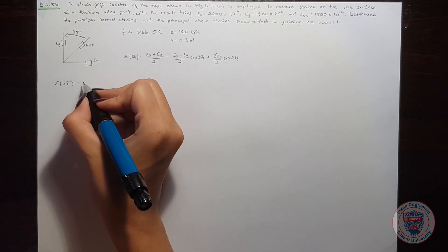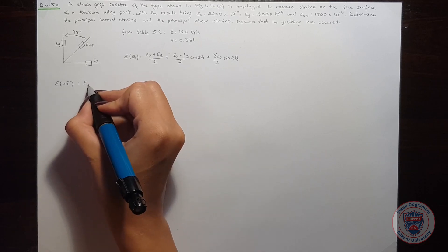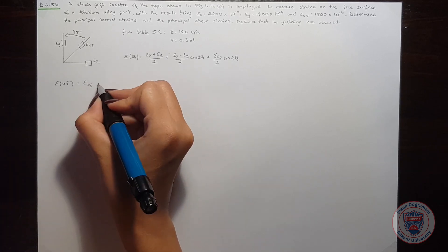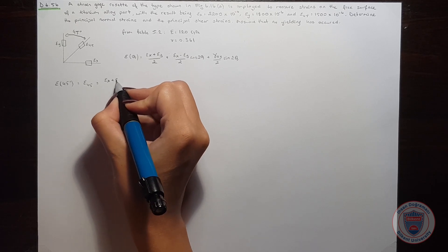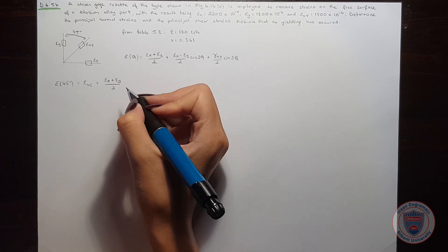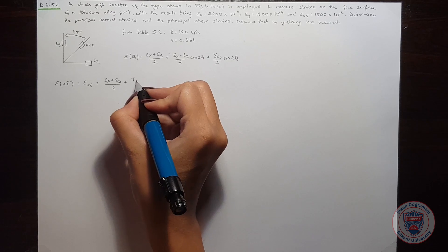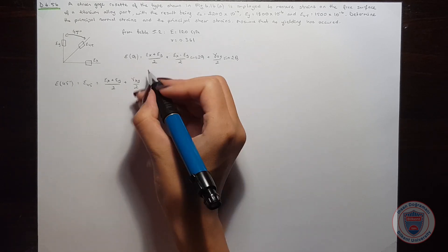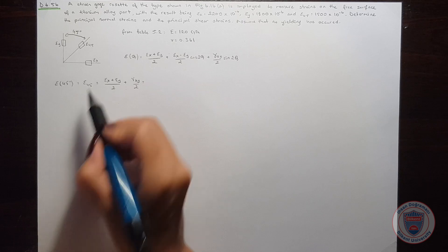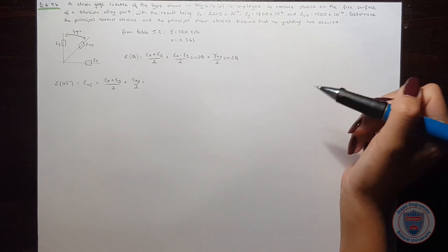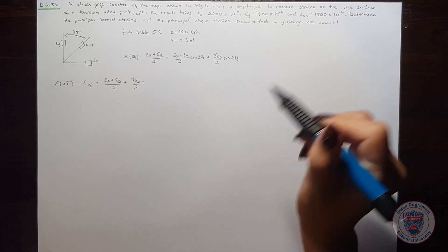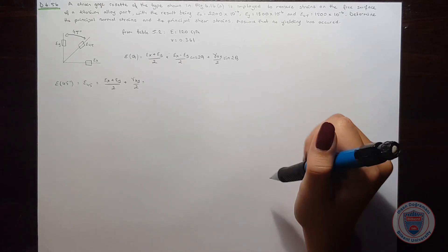We will obtain epsilon 45 and it will be equal to epsilon x plus epsilon y over 2 plus gamma xy over 2. And we know that epsilon 45 is equal to 1500 times 10 to the power of minus 6.